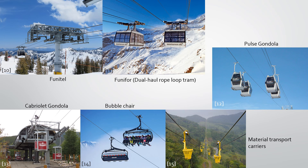Funatels are circulating mono cable detachable lifts where the cabins are suspended between two parallel haul ropes, which provides exceptional wind stability. Funifors, also known as dual haul rope loop trams, look like a typical reversible tram but have two separate haul rope loops with separate drives, allowing them to operate independently as opposed to conventional jig-back systems. Pulse lifts, like the pulse gondola shown on the far right, are circulating fixed grip lifts with groups of closely spaced carriers. The ropeway speeds up while the carriers aren't in the terminals and slows down for loading and unloading, allowing for faster ride times without the costs of detachable lifts.